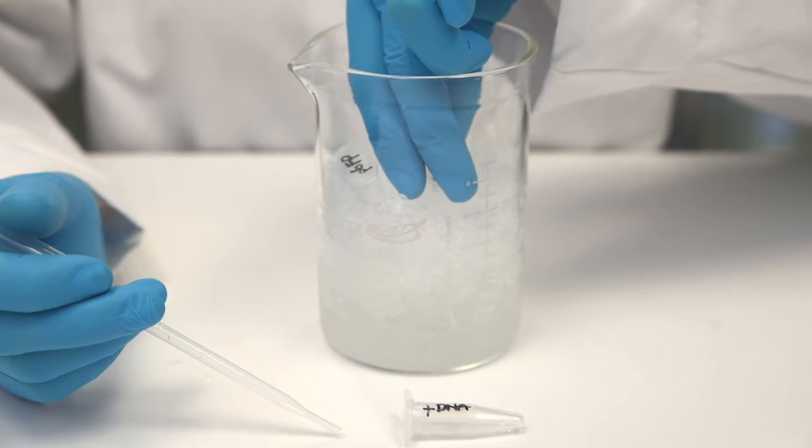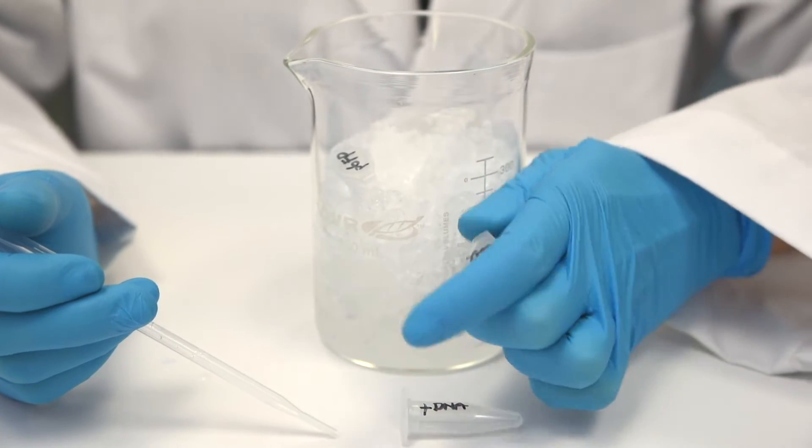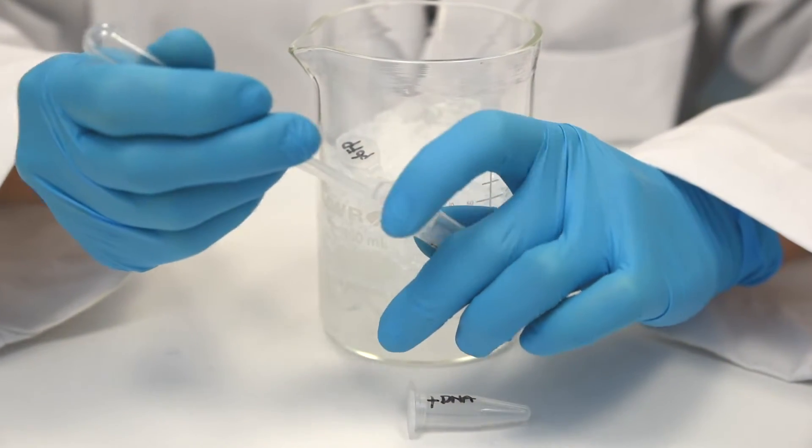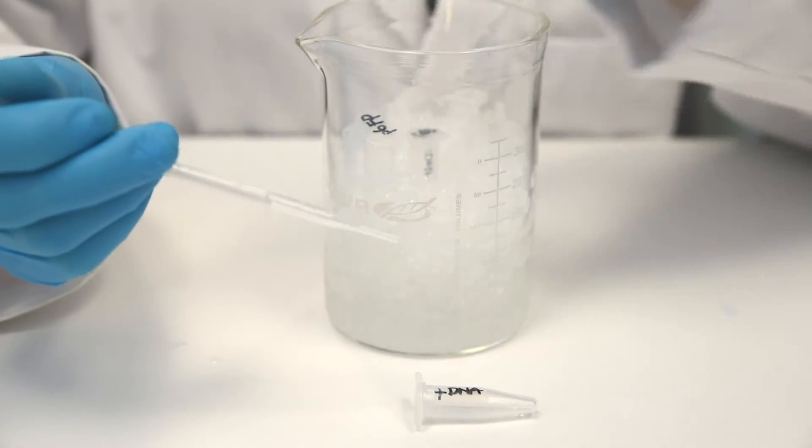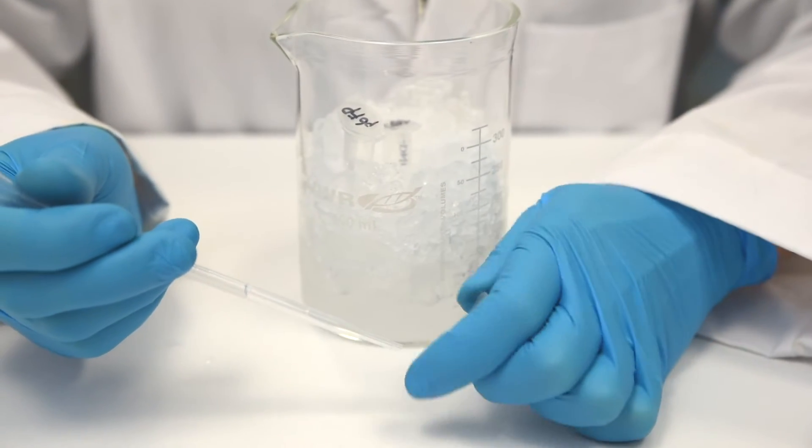Step 4. Transfer 250 microliters, or half of the cell suspension, to the tube labeled plus DNA. Place both tubes on ice.